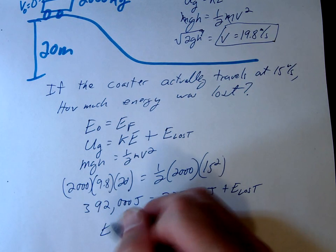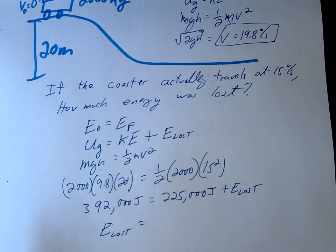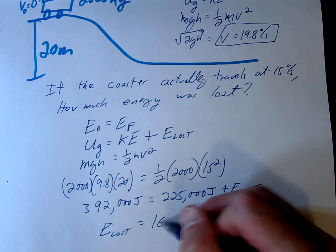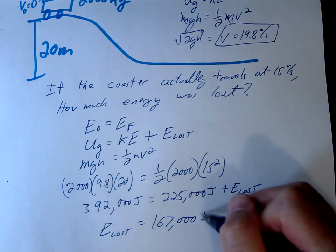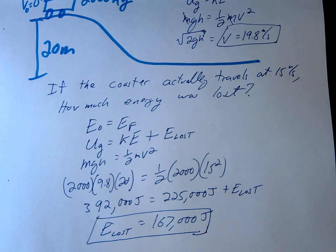So how much energy was lost? Well, we can simply subtract. So 392 minus 225 gets us 167,000 joules. That's how much energy is lost.